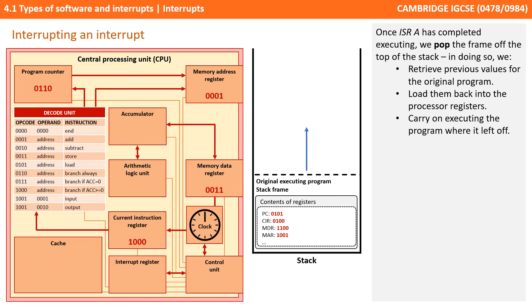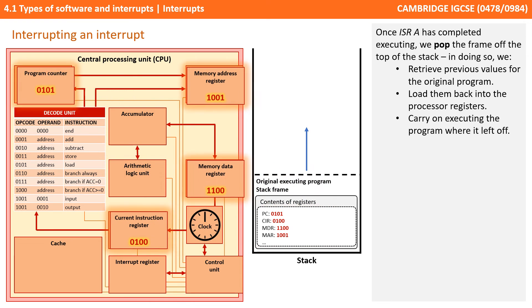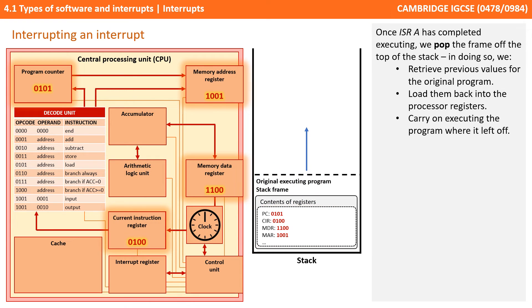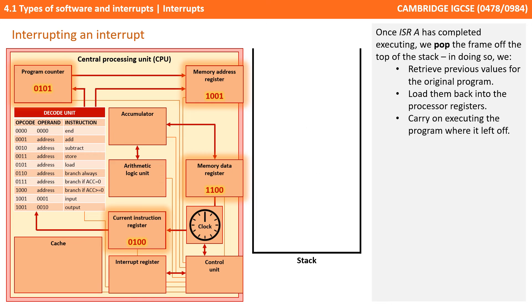Once interrupt service routine A has completed executing, we pop the frame that's on the top of the stack, retrieve the previous values for the original program, load them back into registers, and carry on exactly where we left off.